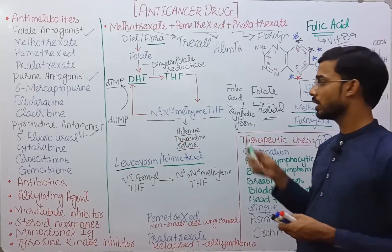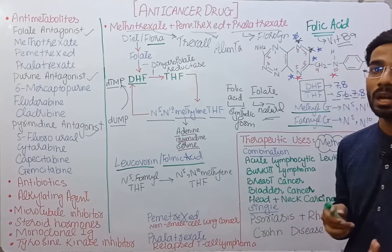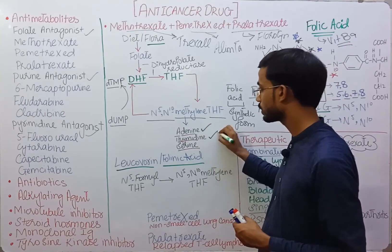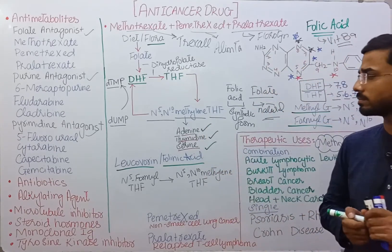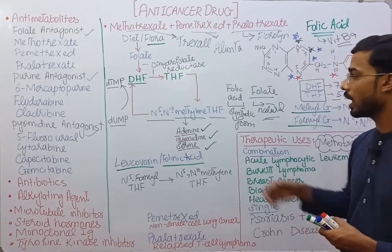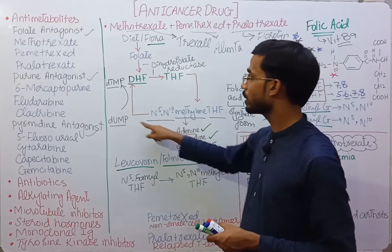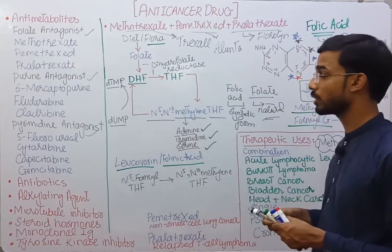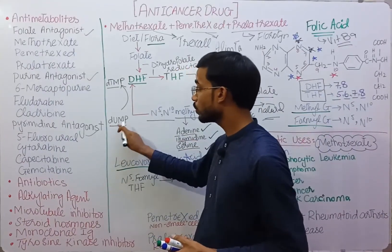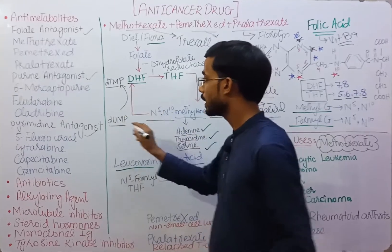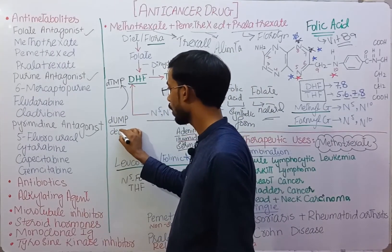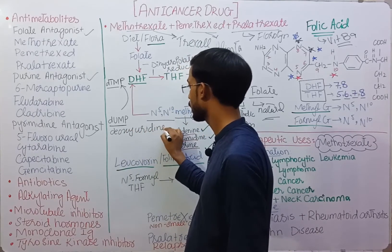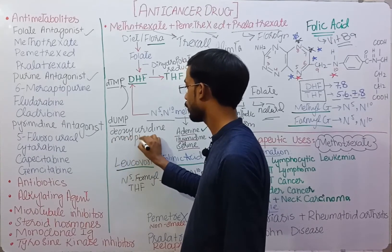This compound carries different carbon fragments which can be adenine, thymine, or serine. This compound then converts back into dihydrofolate (DHF), while thymidylate synthase is involved in the conversion of dUMP (deoxyuridine monophosphate) to dTMP (deoxythymidine monophosphate).